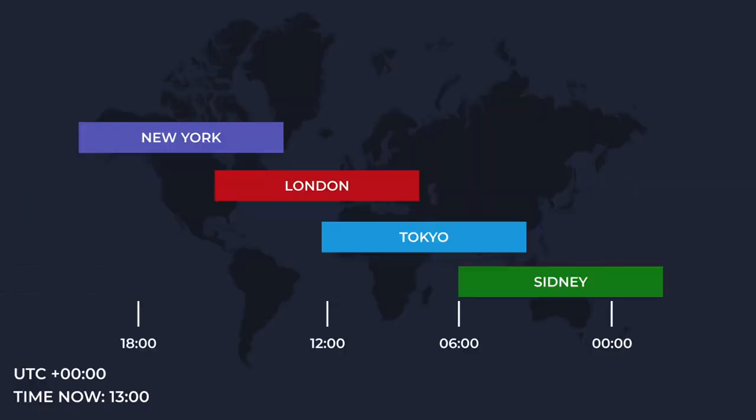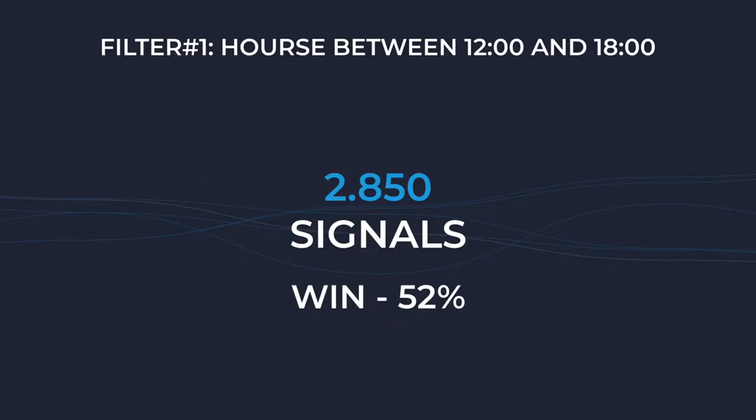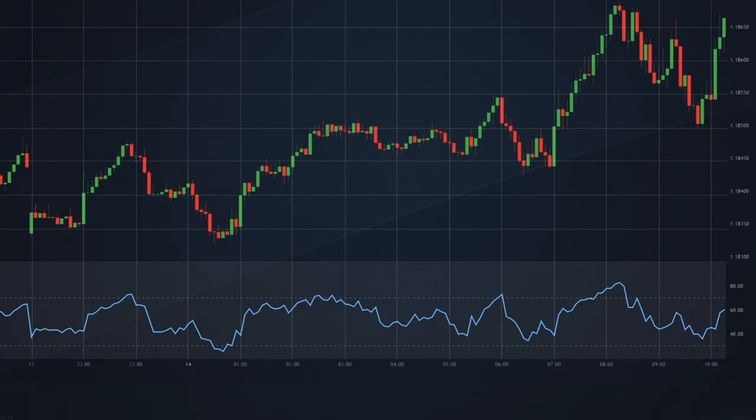We know that the price moves in different ways depending on the trading session, as new players come to the market. The current time is 13:00 hours, so we filter the signals by time, selecting only those signals that were in the period from 12:00 to 18:00 hours. The next step is to get statistics on the values of the technical indicators — let's consider an example using the RSI indicator.